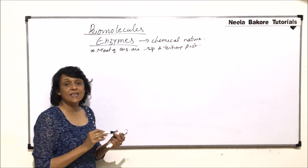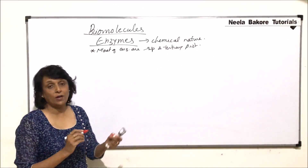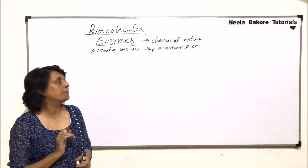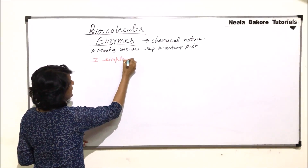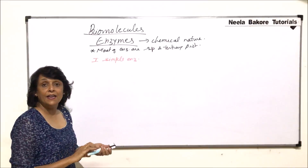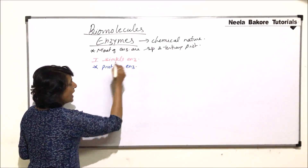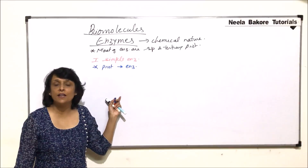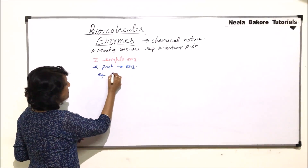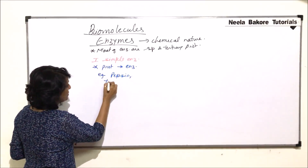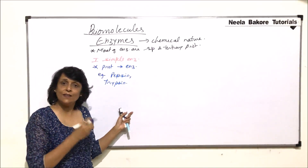Some enzymes work without anything associated with the protein. On the basis of that, we can classify them into two categories. The first category is simple enzymes — when the protein is acting as an enzyme without any non-protein part associated with it.